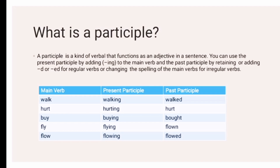As you can see, there are three columns. For the first column, we have the main verb. For the second column, we have the present participle. And for the third column, we have the past participle. The main verb remains as it is: walk, hurt, buy, fly, flow.